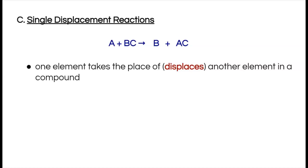The general formula is A plus BC goes to make B plus AC. This reaction type is often called a single replacement because element A is replacing element B. It's almost as though B is being bumped out by A — A knocks B out of the way, B is by itself, and now we have the compound AC.